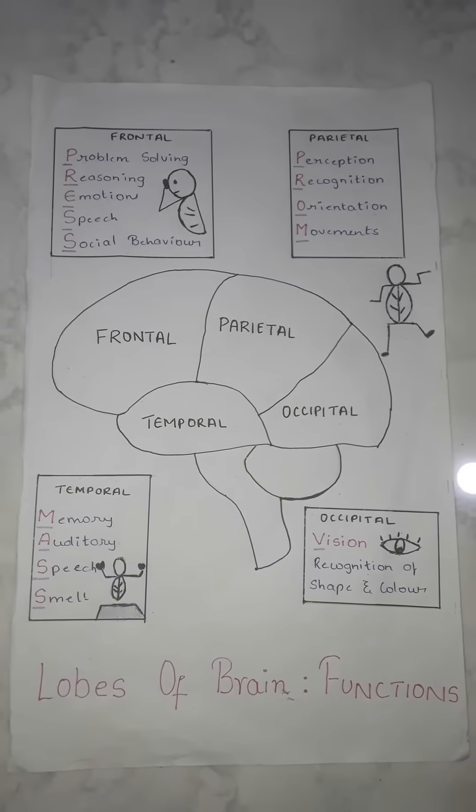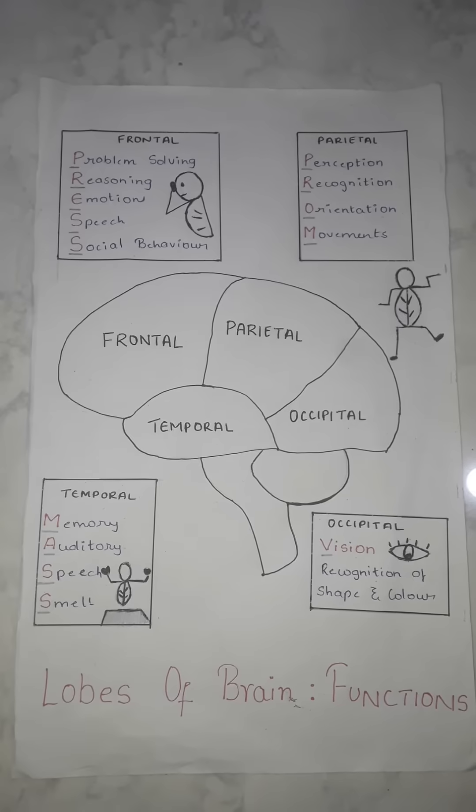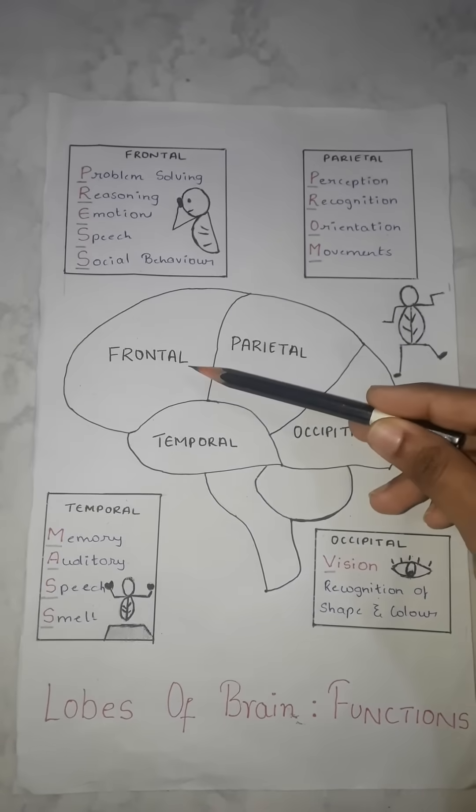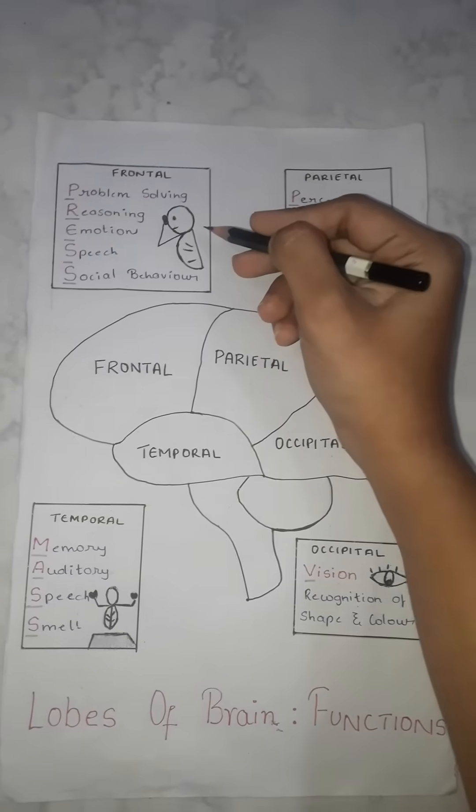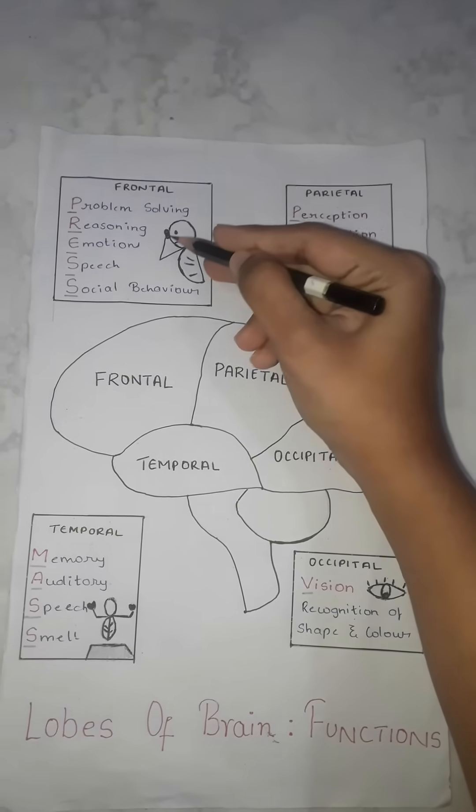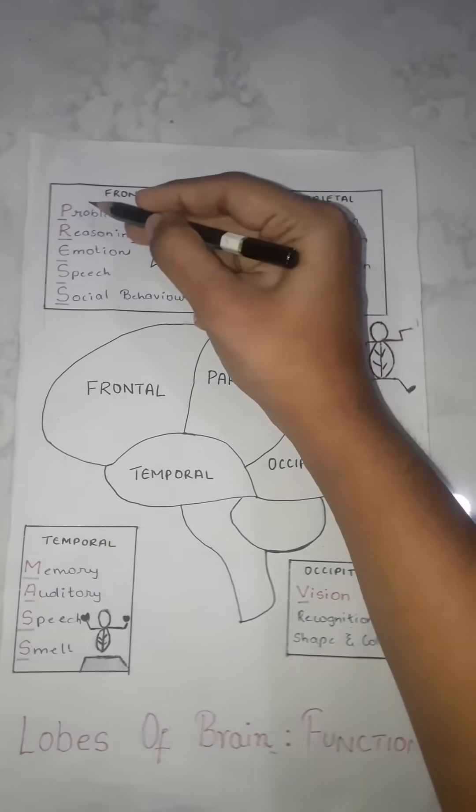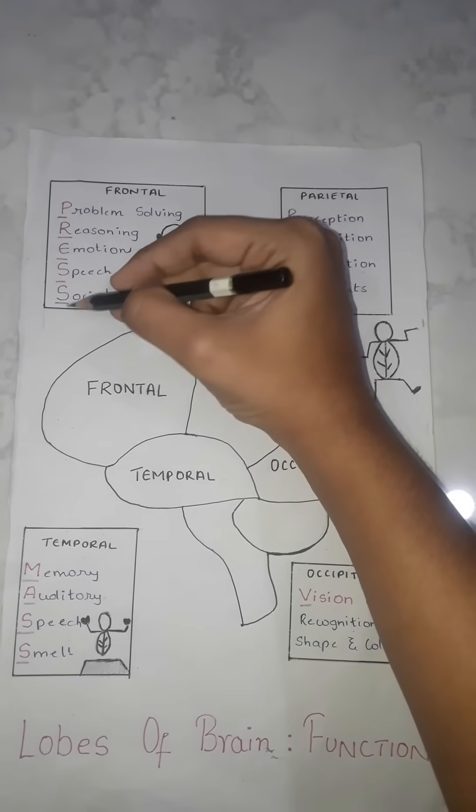So let's understand the mnemonic for the functions of lobes of brain. So the first one is the frontal lobe. In the frontal lobe, I want you to remember a person who has headache and he is pressing his forehead. So the mnemonic over here is press, P-R-E-S-S.